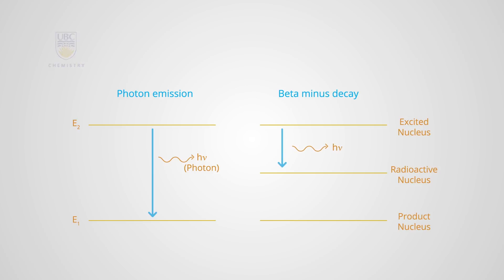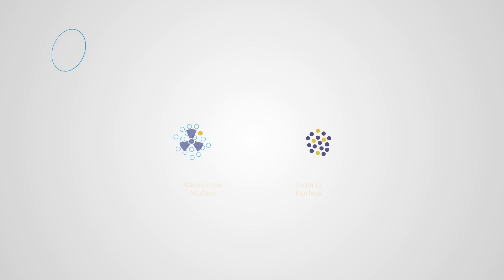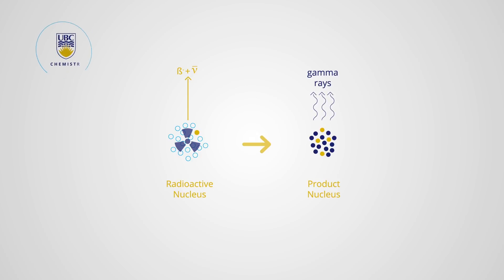While beta decay is similar to photon emission, there are some important differences. Rather than emitting a photon, which is purely energy, beta decay emits a particle that has both mass and charge. In addition, it has been found that beta decay doesn't emit just the beta particle, but simultaneously emits another particle called a neutrino. Following beta decay, the excited product nucleus emits gamma rays to reach its ground state. One can identify the presence of a specific sample atom by detecting the high energy radiation emitted by the nucleus following neutron capture.